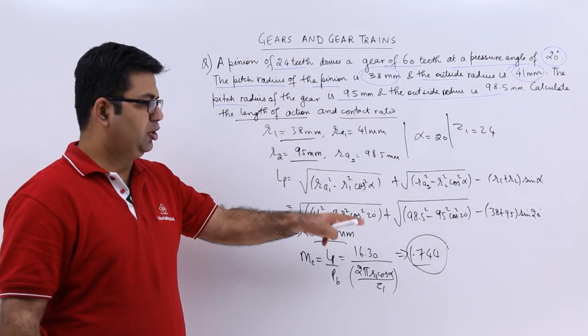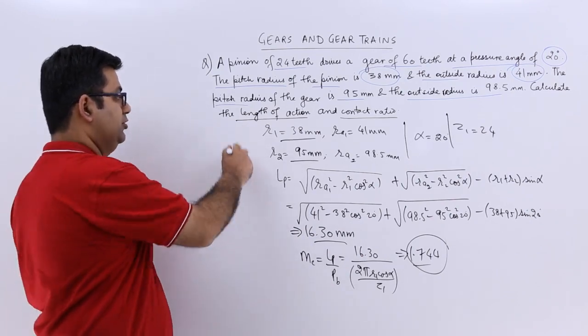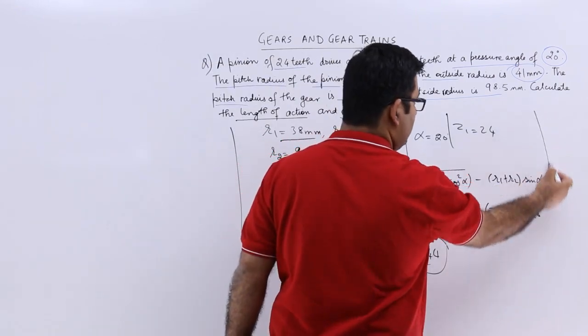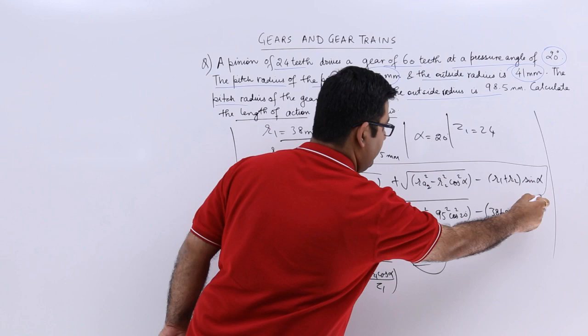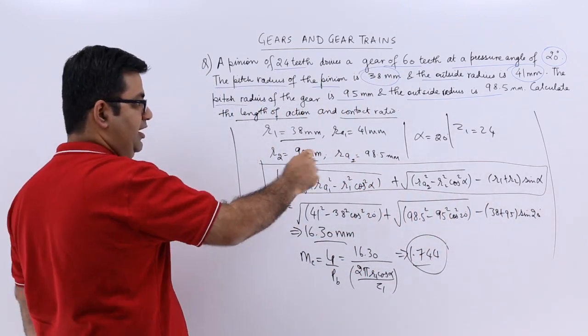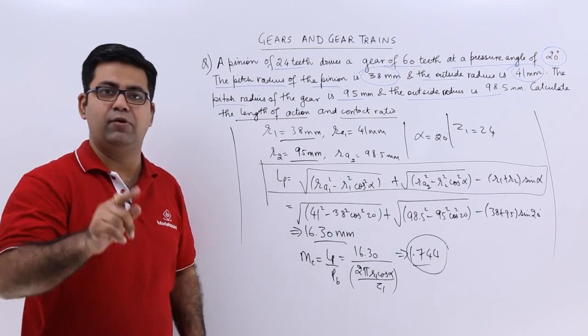So almost 2 gears or 2 teeth are in contact at one given point. So this is how you solve a question. Make sure you note down this formula and understand the terms in this. After this let us have a look at one more question.